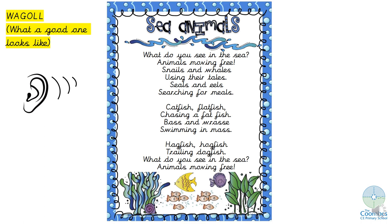Sea Animals. What do you see in the sea? Animals moving free. Snails and whales using their tails. Seals and eels searching for meals. Catfish, flatfish chasing a fat fish. Bass and wrasse swimming in mass. Hagfish, hogfish trailing dogfish. What do you see in the sea? Animals moving free.